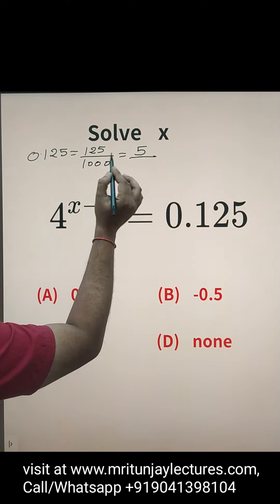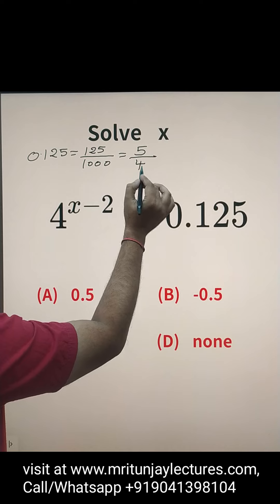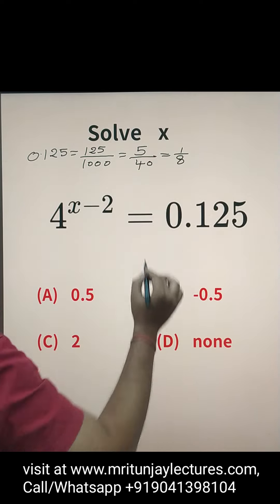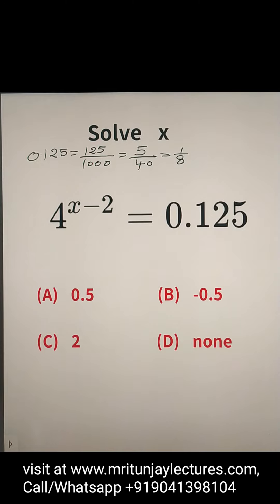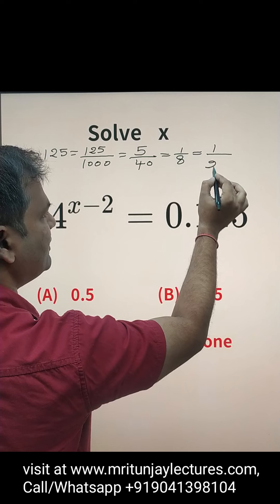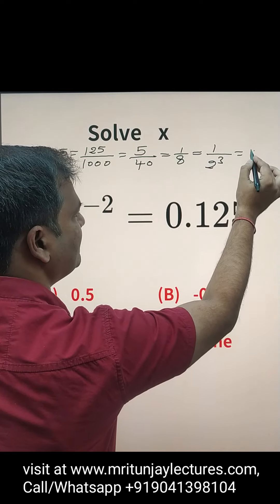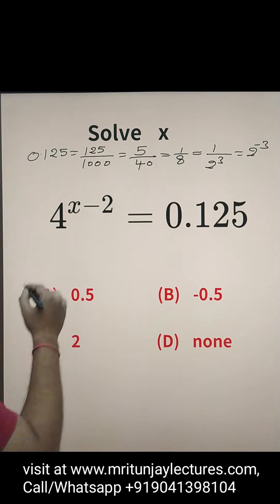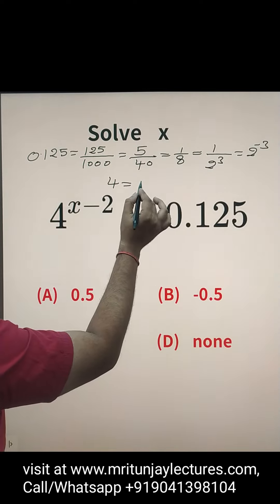Now, 1 by 8 means basically 2 to the power minus 3. And 4 is also written as 2 squared.